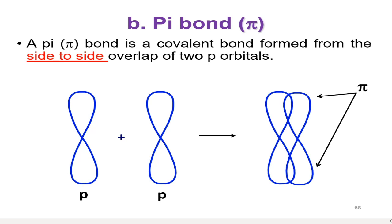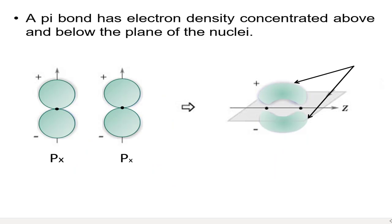A pi bond has electron density concentrated above and below the plane of the nuclei. As a result, a pi bond is weaker than a sigma bond.